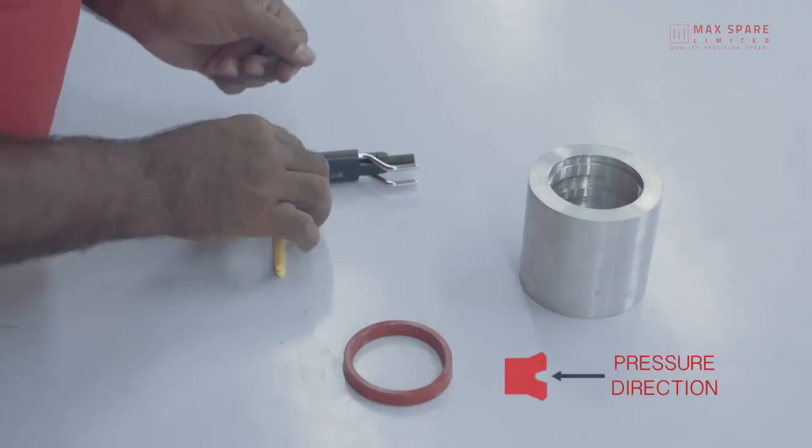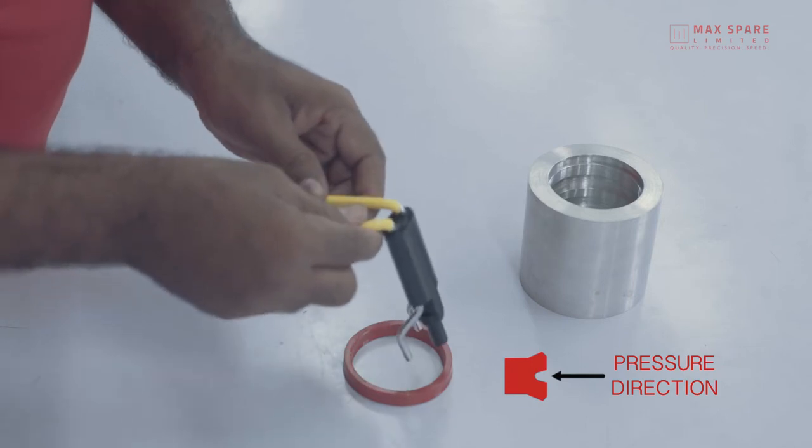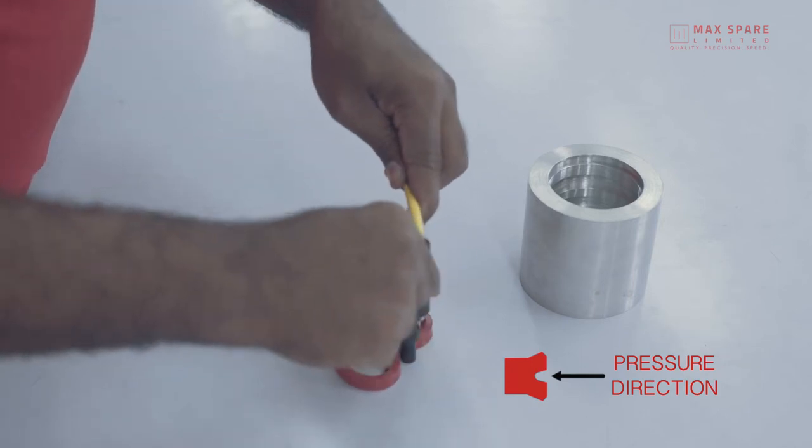Place the seal on a clean surface. Take the appropriate size seal twister, place it on the seal and twist it gently to form a kidney shape.